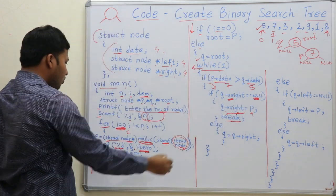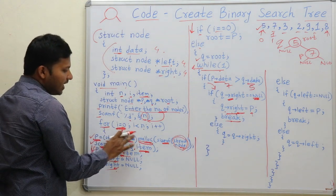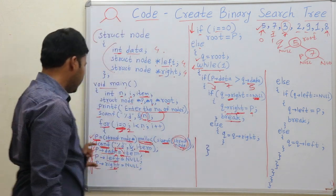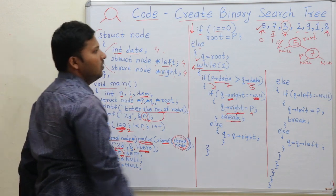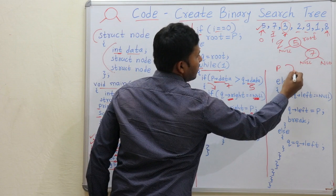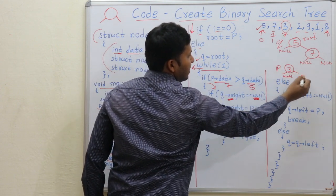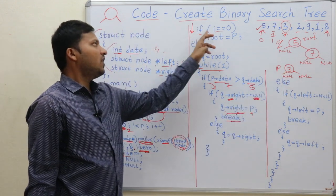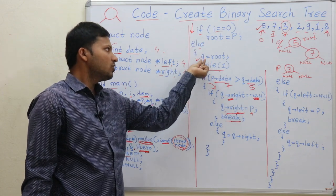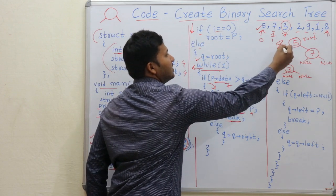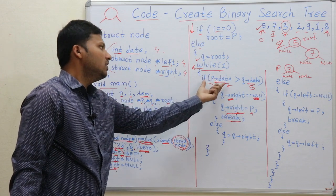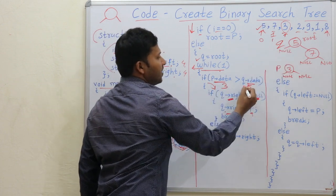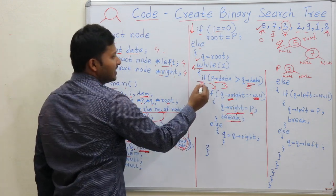After breaking from the while, we go to the next for loop iteration. Now i will become 2 and the element is 3. A new node p is created with data 3, left null and right null. We find its correct position: q starts from root again. Check whether p points data 3 is greater than q points data 5 — no, so we go in else. Since 3 is less than 5, it will go to the left side.